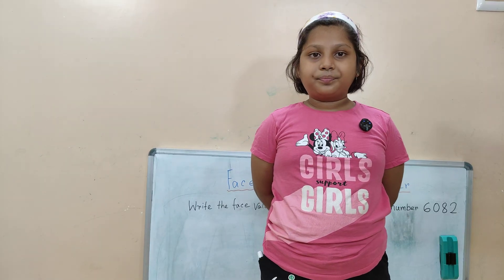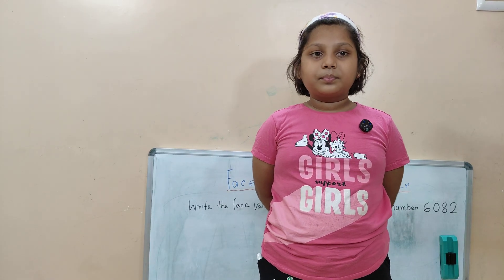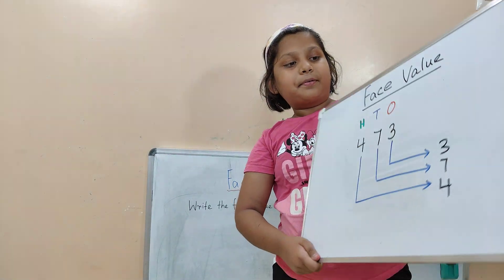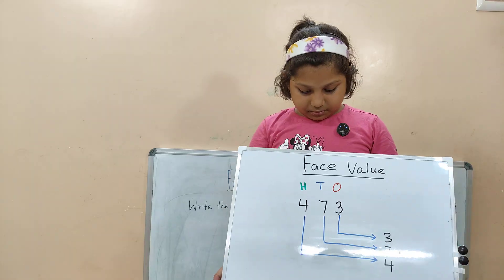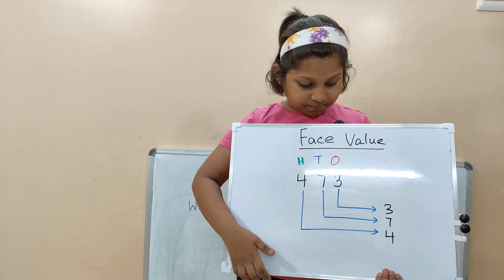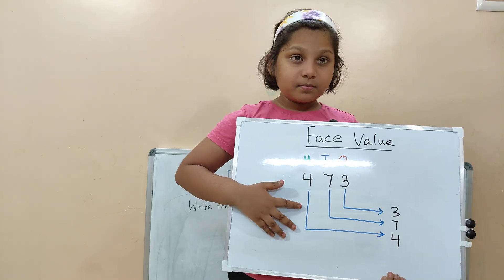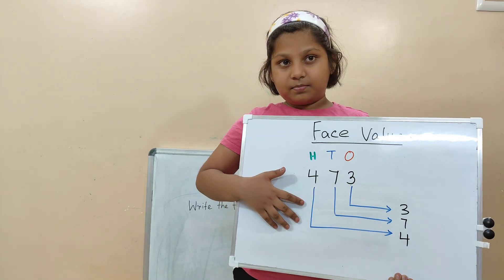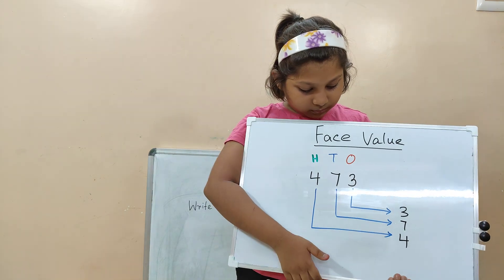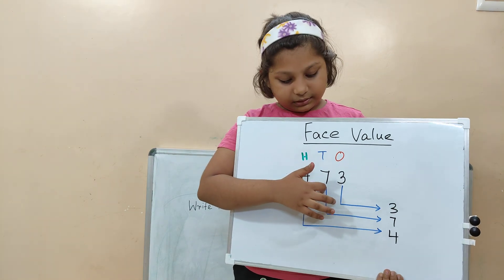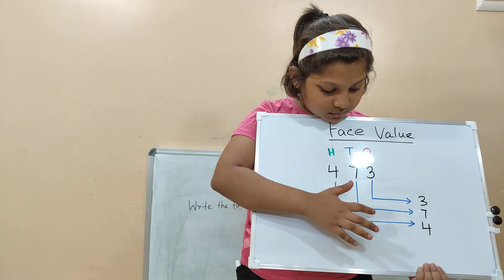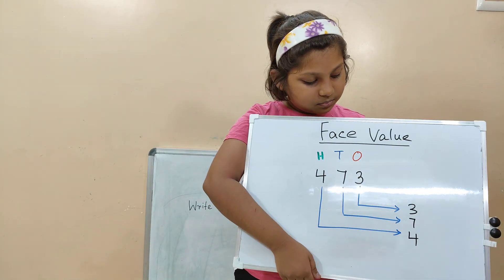Let me show you. Suppose 473 — see the board I have written. 4 is in the 100th place, but it doesn't matter. The position doesn't matter; the 4 will remain 4 when we find the phase value. 7 is in the 10th place, but it doesn't matter. The digit itself is the phase value — 7 is the phase value. And 3, 3 is the phase value.